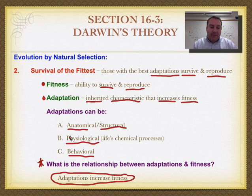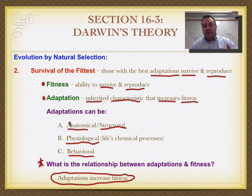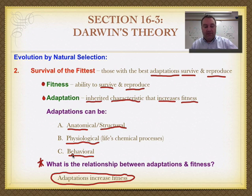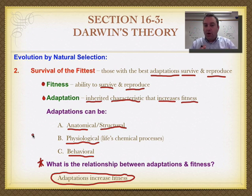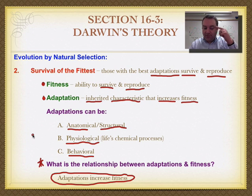Remember APB — anatomical, physiological, and behavioral. Adaptations can be APB. This is a very important section, so make sure you study these notes over and over again because these are the key concepts when it comes to evolution. You need to have this material mastered and committed to memory.